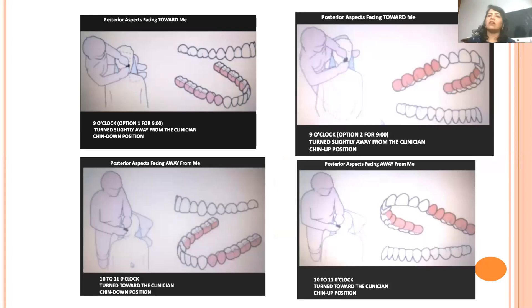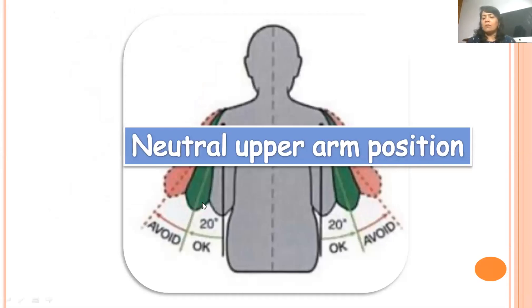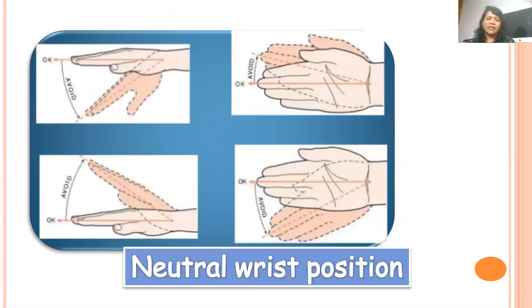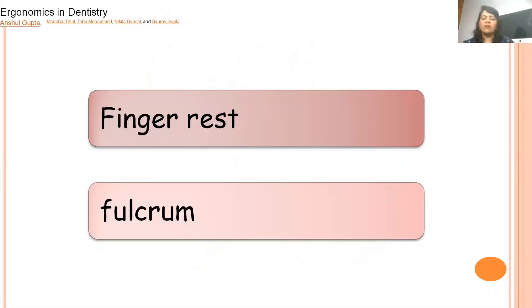Focusing on neutral operator position: never shrug your shoulders to improve fine motor work in the patient's mouth — always keep it neutral. Never bend or twist your torso just to get better access; instead, learn to use magnification. Never keep your elbows beyond 20 degrees away from the shoulder — you will be putting heavy pressure on the shoulder and elbow joints, so always keep them close to the body. Keep your wrist in neutral position — never tip it downwards, upwards, into adduction, or abduction — as this puts tremendous pressure on the wrist and compromises fine motor skills. Always use a finger rest and use an intraoral fulcrum preferably when working.